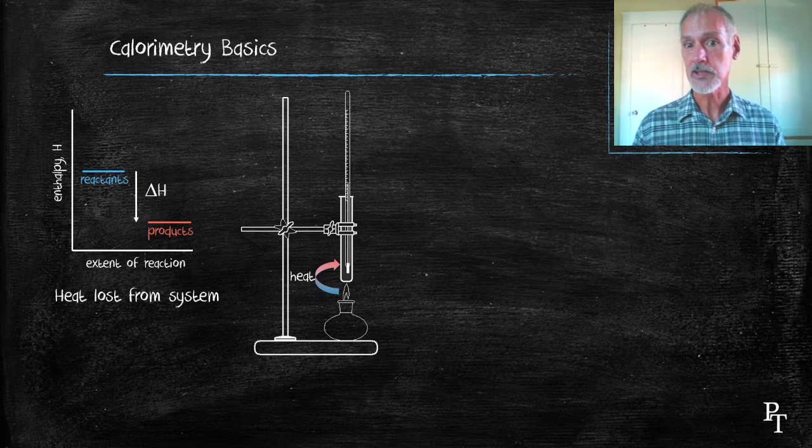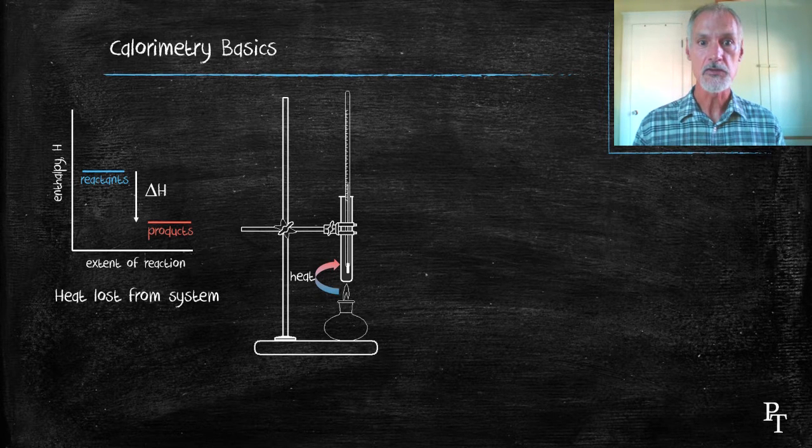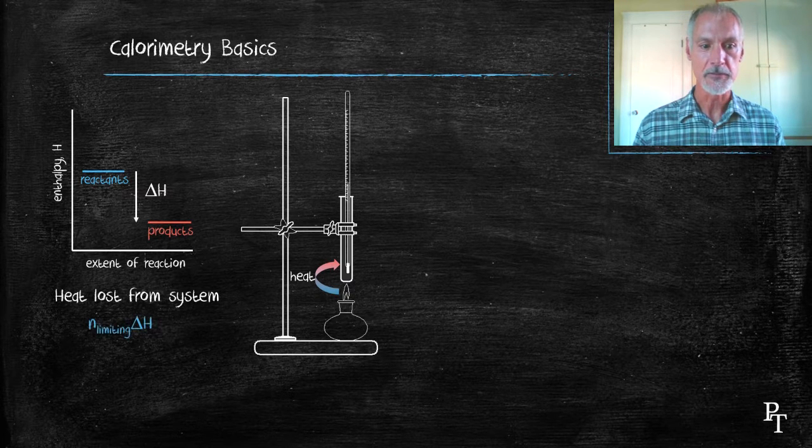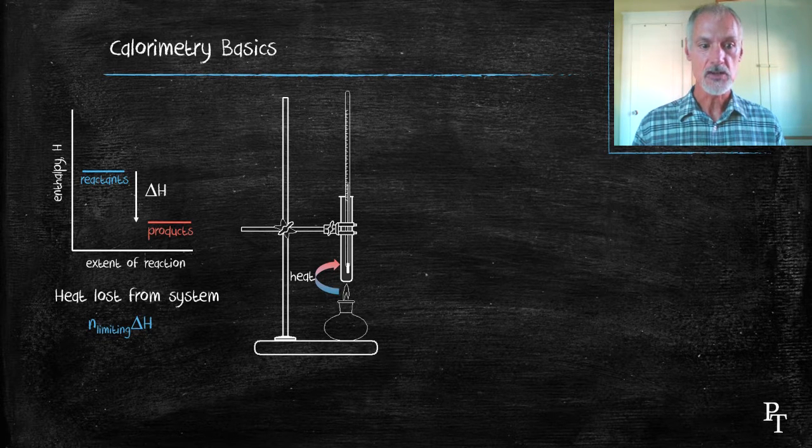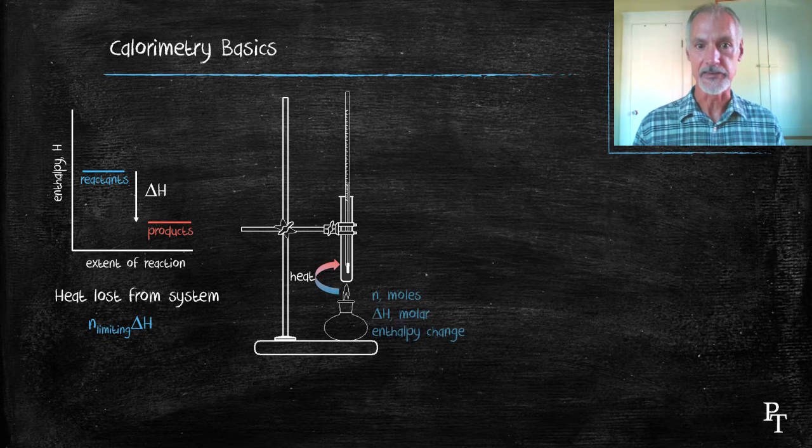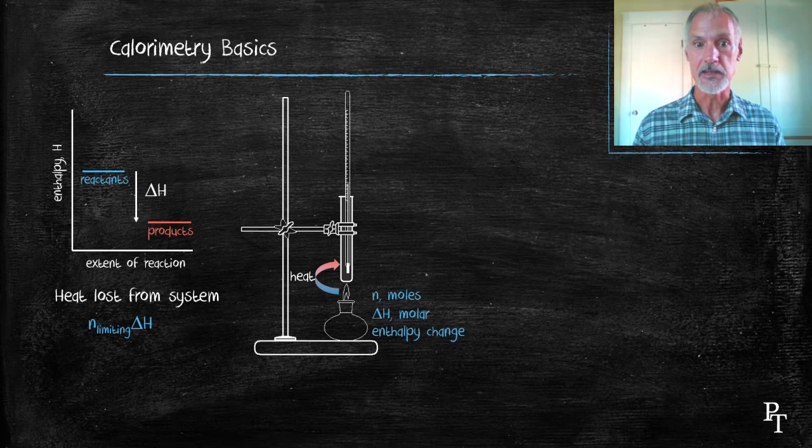If I want to determine the total heat evolved, I need to know the number of moles of fuel that were burned. So the number of moles of fuel N and delta H all refer to my reacting system, in this case, the burning alcohol.